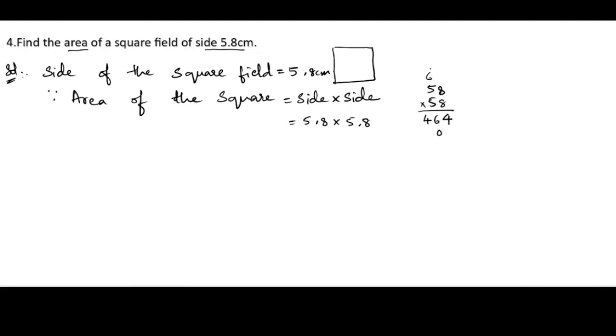is 40, 5 times 5 is 25 plus 4 is 29. 4, 6 plus 0 is 6, 4 plus 9 is 13. So this is 2, so 3364. Let us write 3364. Here the decimal, here the decimal is there after one digit.